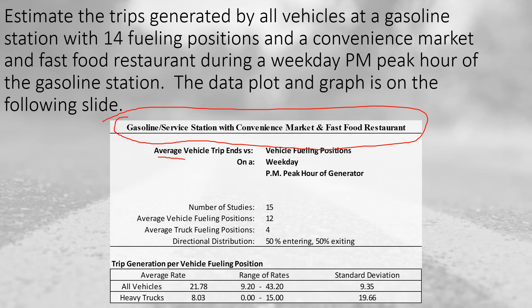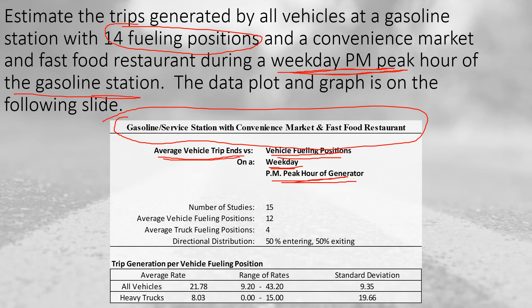We're going to look at average vehicle trip ends based on the number of vehicle fueling positions, which was given as 14 — that's the independent variable we'll use in this process. We also want to look at the weekday PM peak hour of the generator, meaning the peak hour of the gasoline station itself.